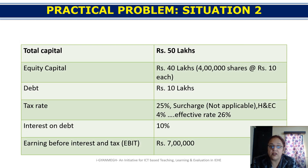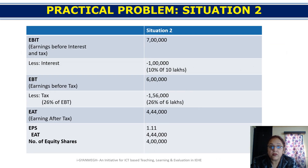Situation 2: Debentures of 10 lakhs are issued at 10% interest. Total capital remains 50 lakhs. Equity shares are 40 lakhs (4 lakh shares at Rs. 10 each). EBIT is 7 lakhs. First, deduct interest on 10 lakhs at 10%, which is Rs. 1 lakh. Profit before tax becomes 6 lakhs. After deducting 26% tax, profit after tax is Rs. 4,44,000. Dividing by 4 lakh equity shares, EPS is Rs. 1.11.